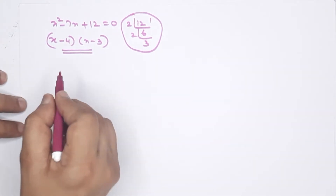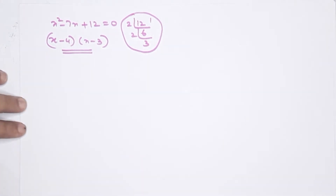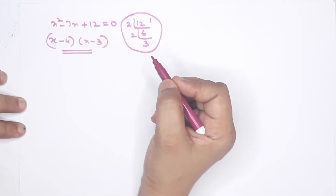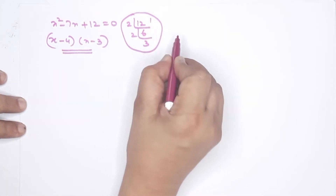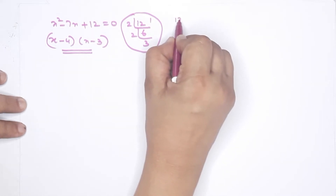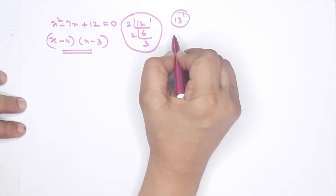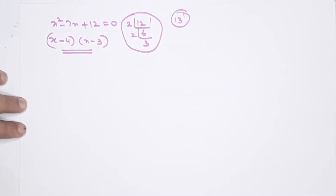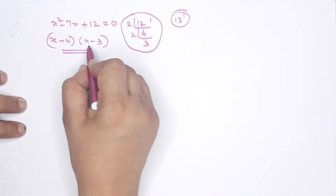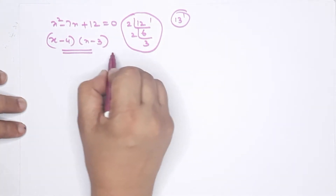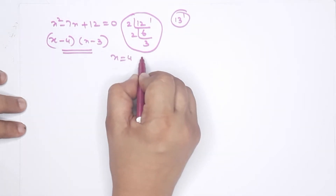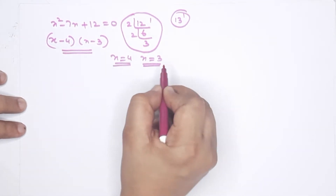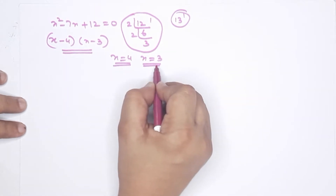We have factors — that's why we need factorization. We have to factorize it. If we get the value, x equals 4. If x equals 3, we get rational solutions.